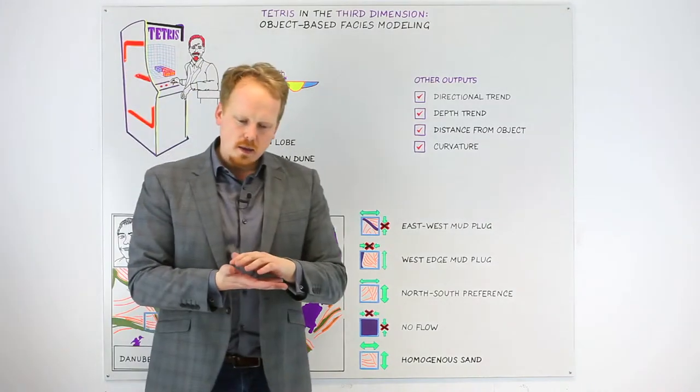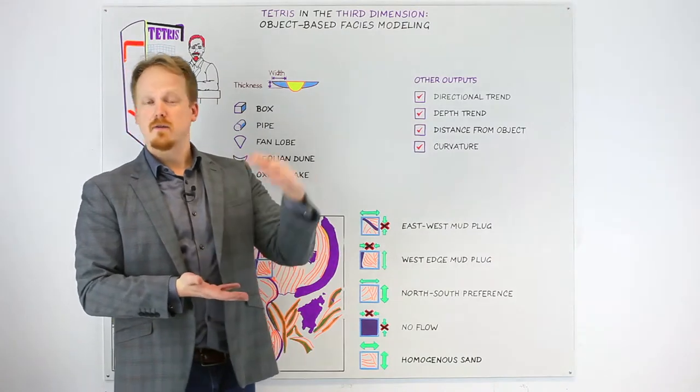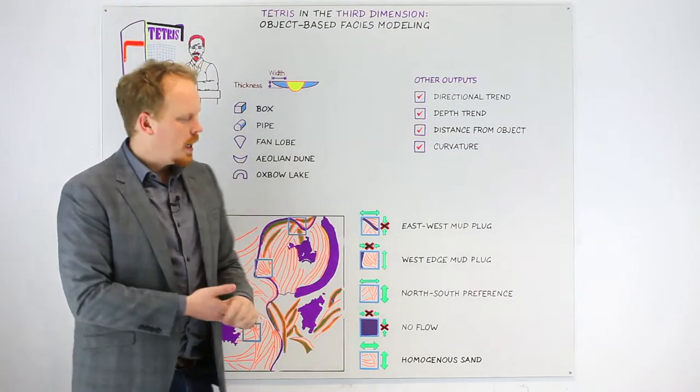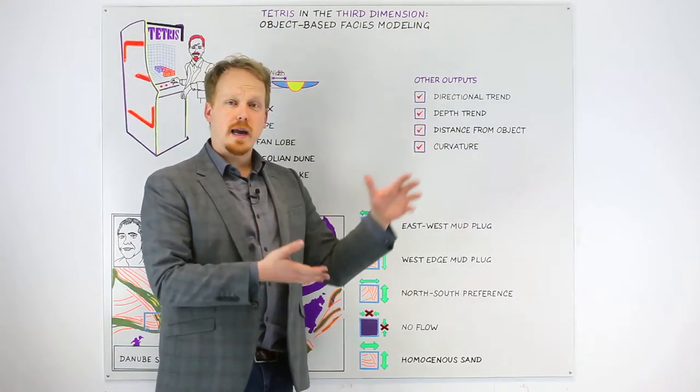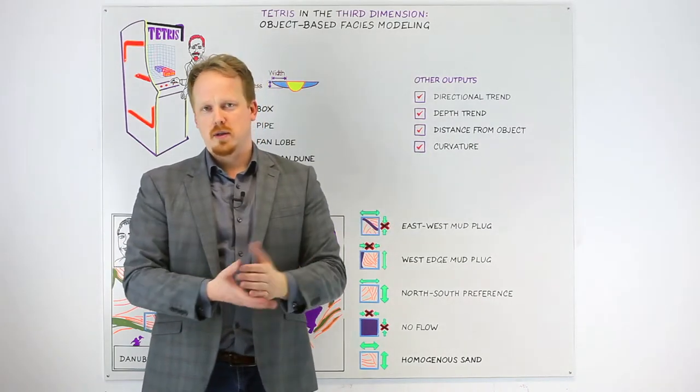Likewise, I might want to say that these point bar systems have got coarser sediment at the base of them and they're fining upwards across them. So that depth trend can come in very handy. It's very difficult when you're doing your data analysis to have hard data to correlate this against, so you're going to have to model that based upon your understanding of geology.